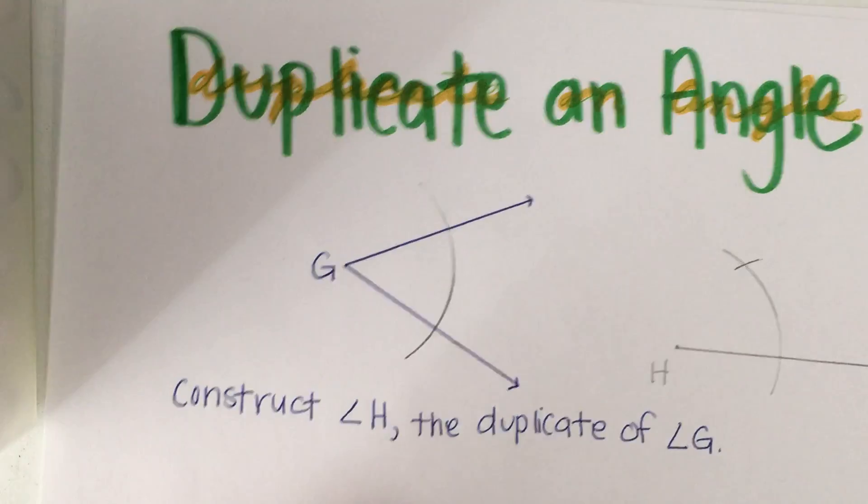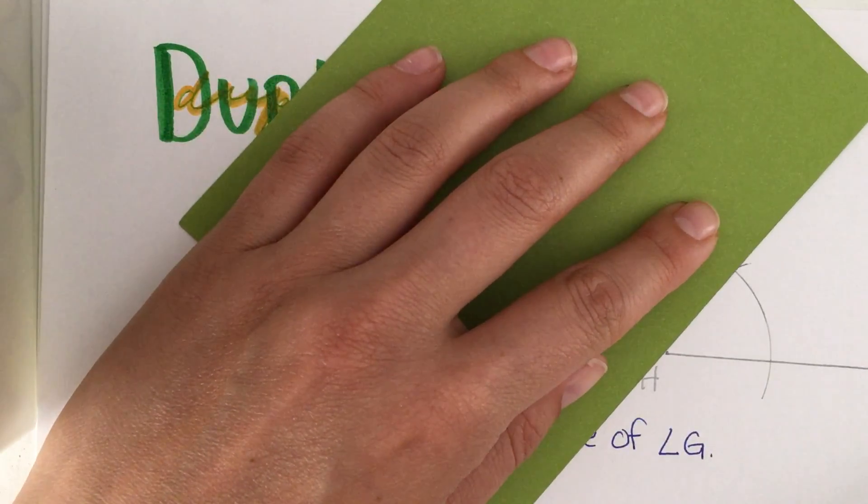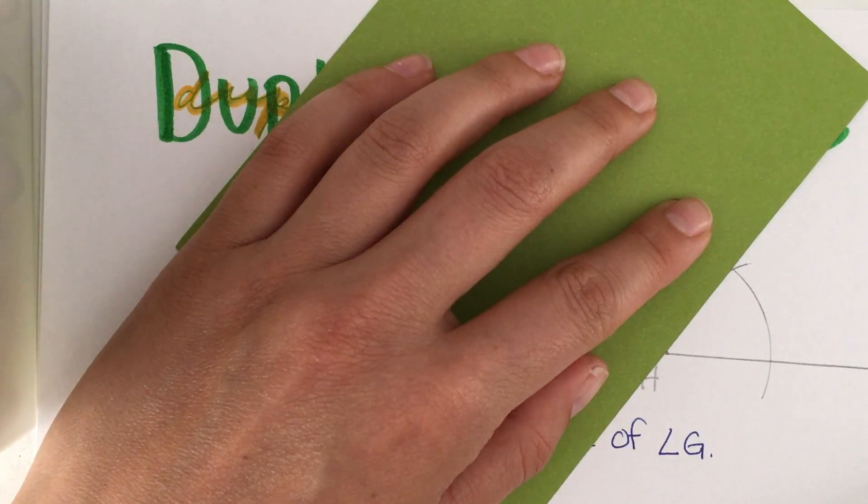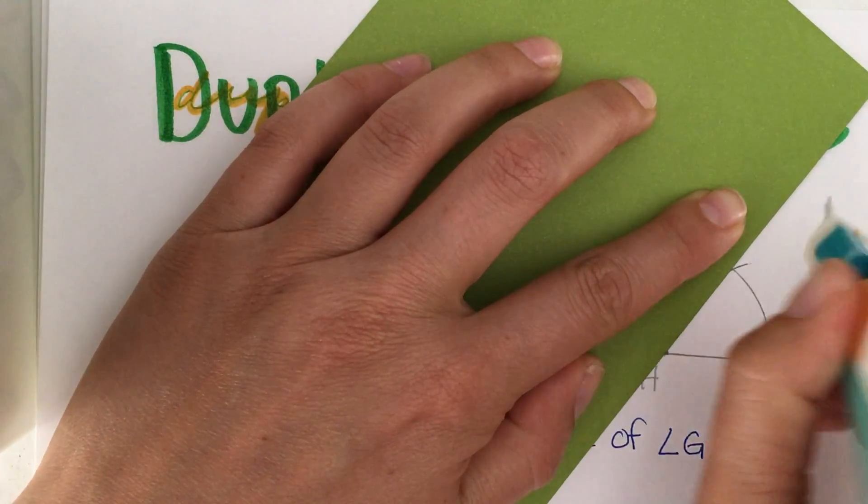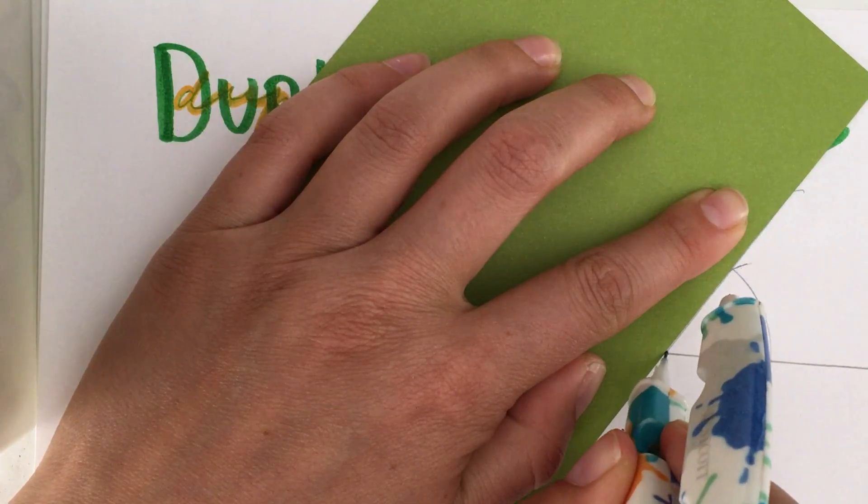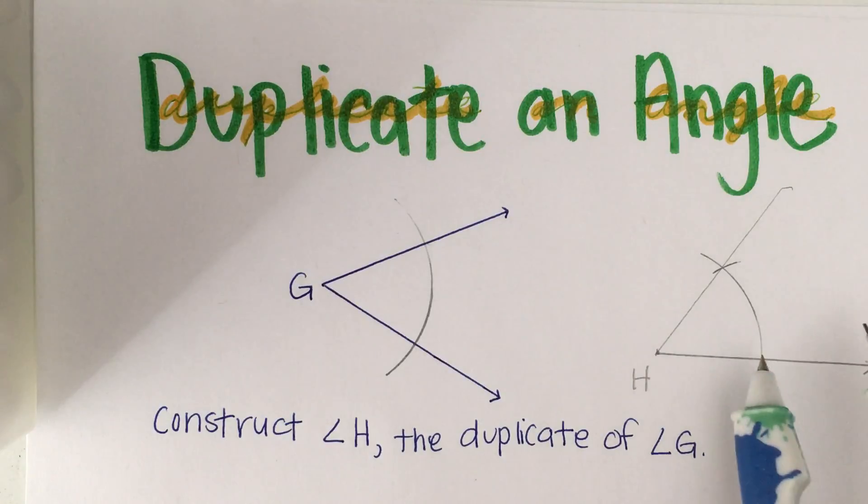Then I'm going to line up point H and the intersection between the two arcs that I just made and draw the second side of the angle. So we have angle H, the duplicate of angle G.